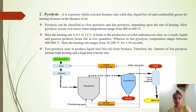Pyrolysis is the process which converts biomass into solid char, liquid bio-oil, and combustible gases by heating biomass in the absence of air. Pyrolysis can be classified as slow pyrolysis and fast pyrolysis depending upon the rate of heating. Slow pyrolysis occurs over hours when the temperature ranges from 400 to 600 degrees Celsius, with a heating rate of 0.1 to 1°C/s, leading to the production of solid carbonaceous char, while liquid and gaseous products form in low quantities.